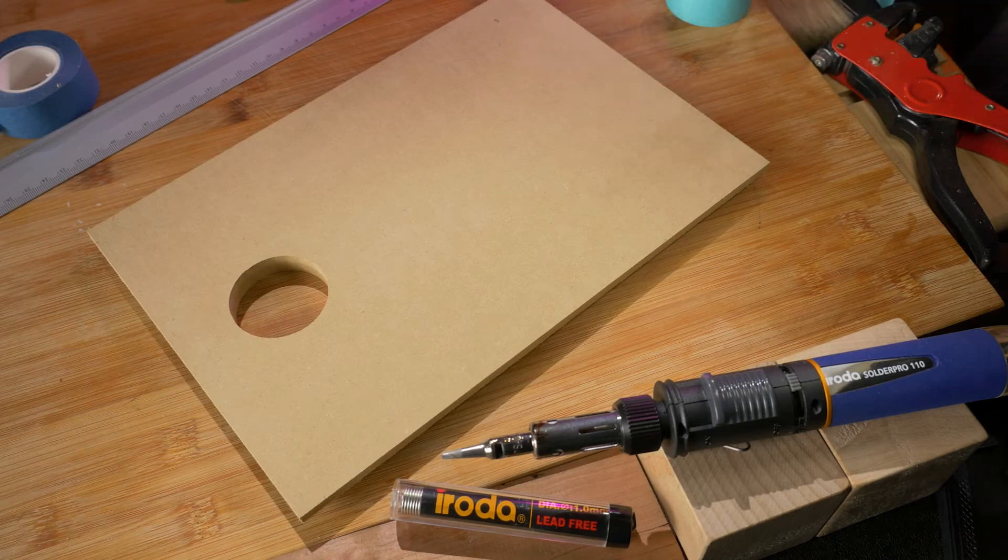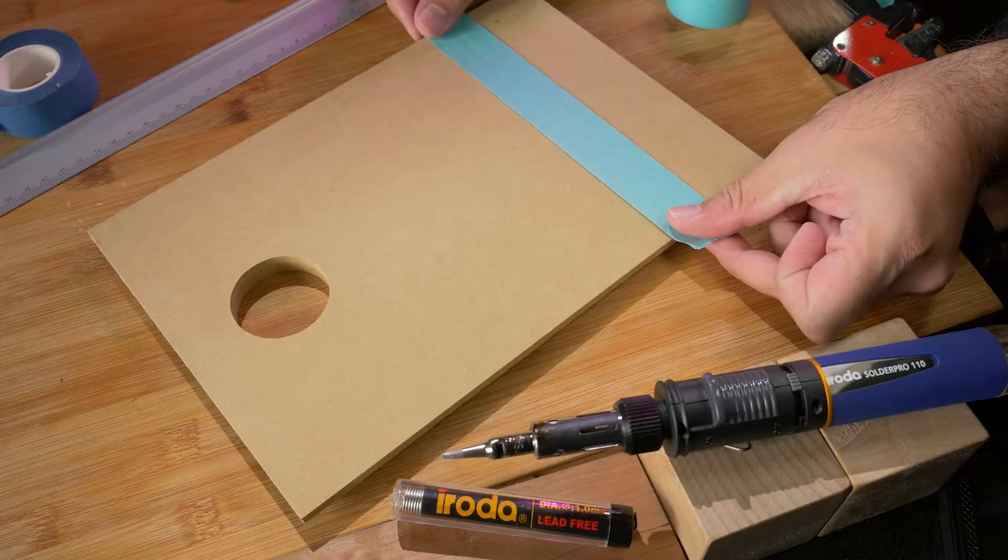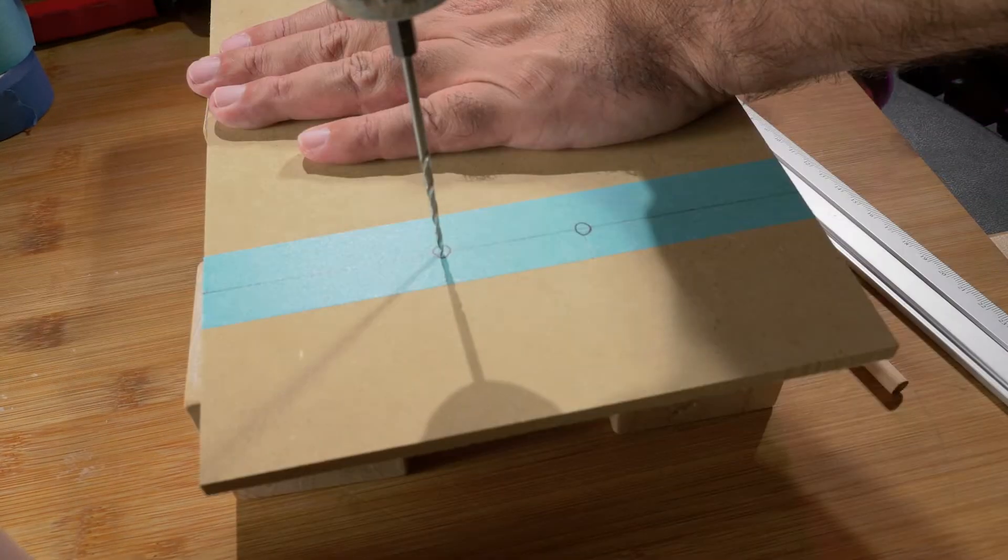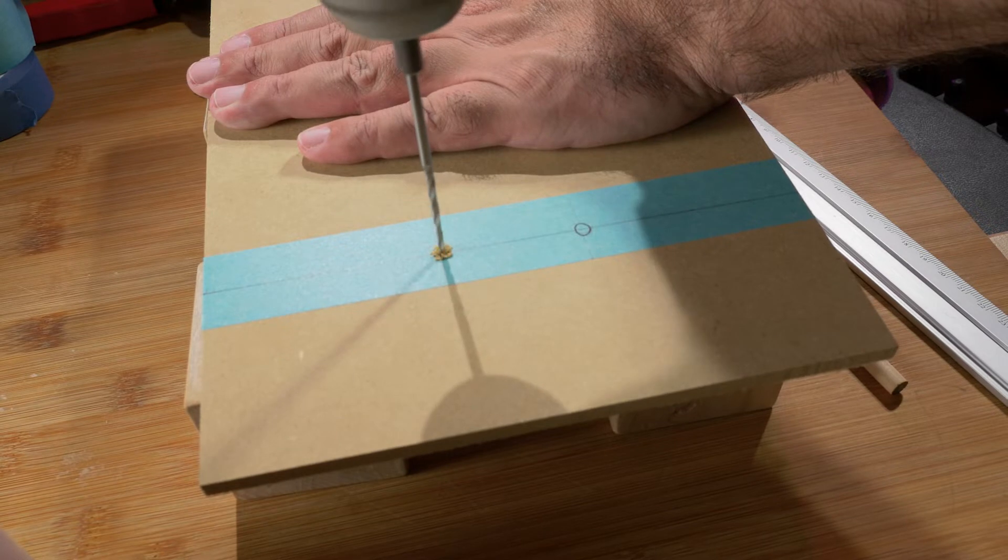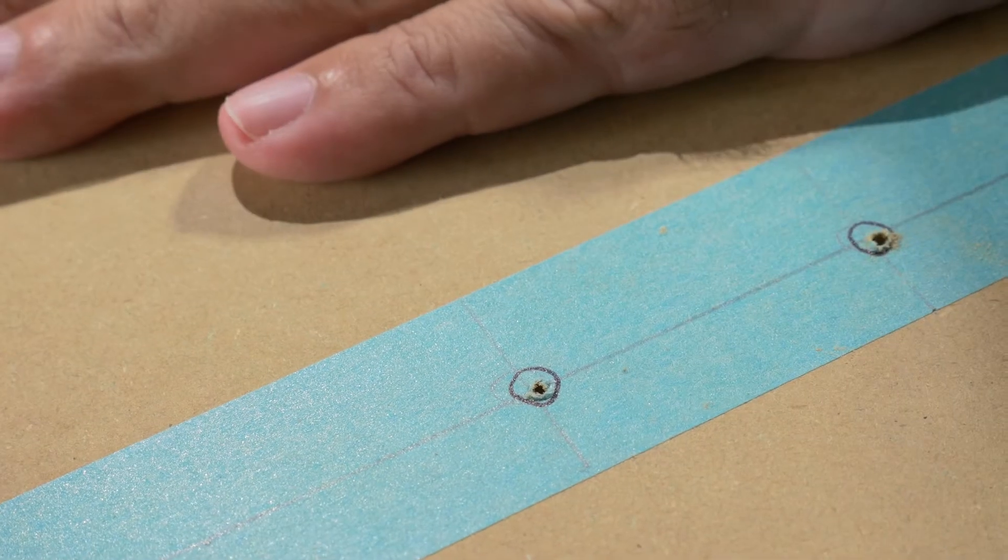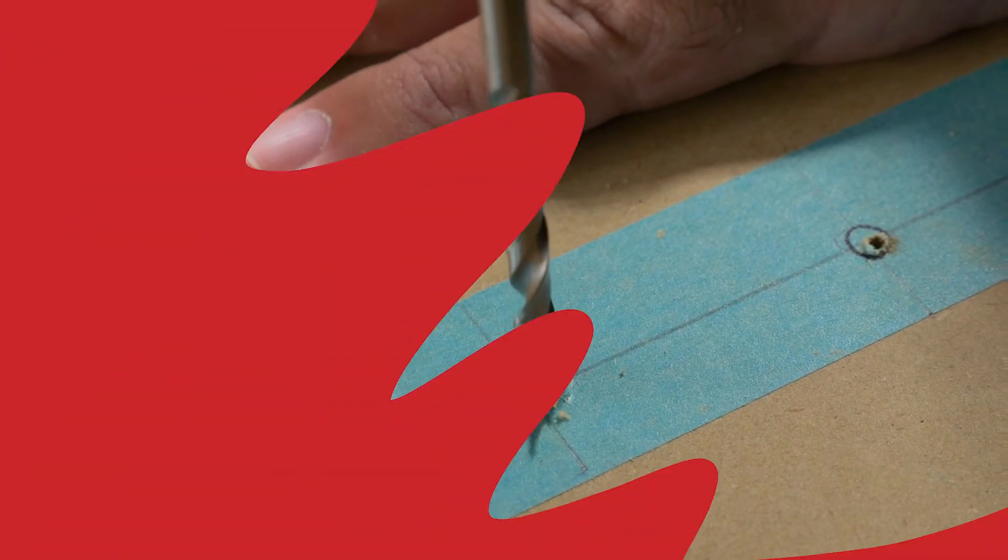The first thing I'm going to do is go ahead and drill in the holes for my terminal posts. When I work with MDF, I always like to do pilot holes and just widen it out with a larger drill bit afterwards. MDF has a real tendency to tear out, so make sure that you are going in nice and slow.